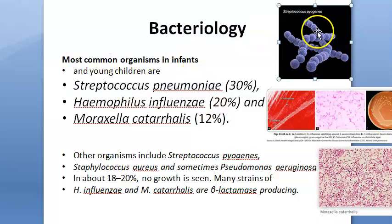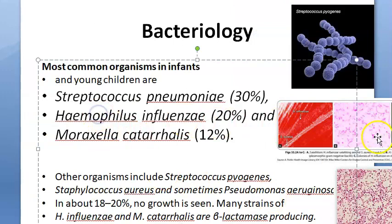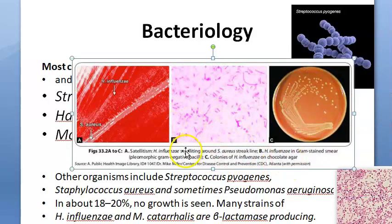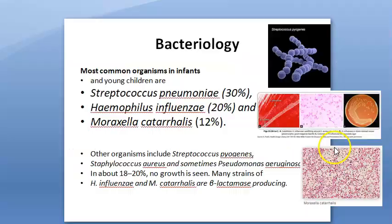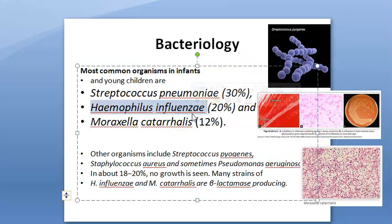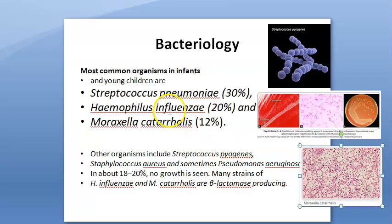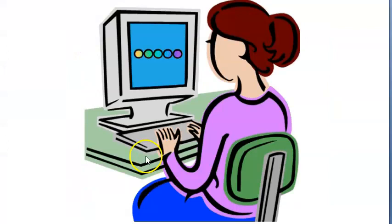The main causative bacteria are: Streptococcus pneumoniae, Haemophilus influenzae, and Moraxella catarrhalis. Note that Haemophilus influenzae is not a virus despite its name — it is a gram-negative, pleomorphic bacillus that does not cause influenza but can cause middle ear infections and meningitis. It grows on chocolate agar and shows satellitism. Moraxella catarrhalis is also gram-negative.